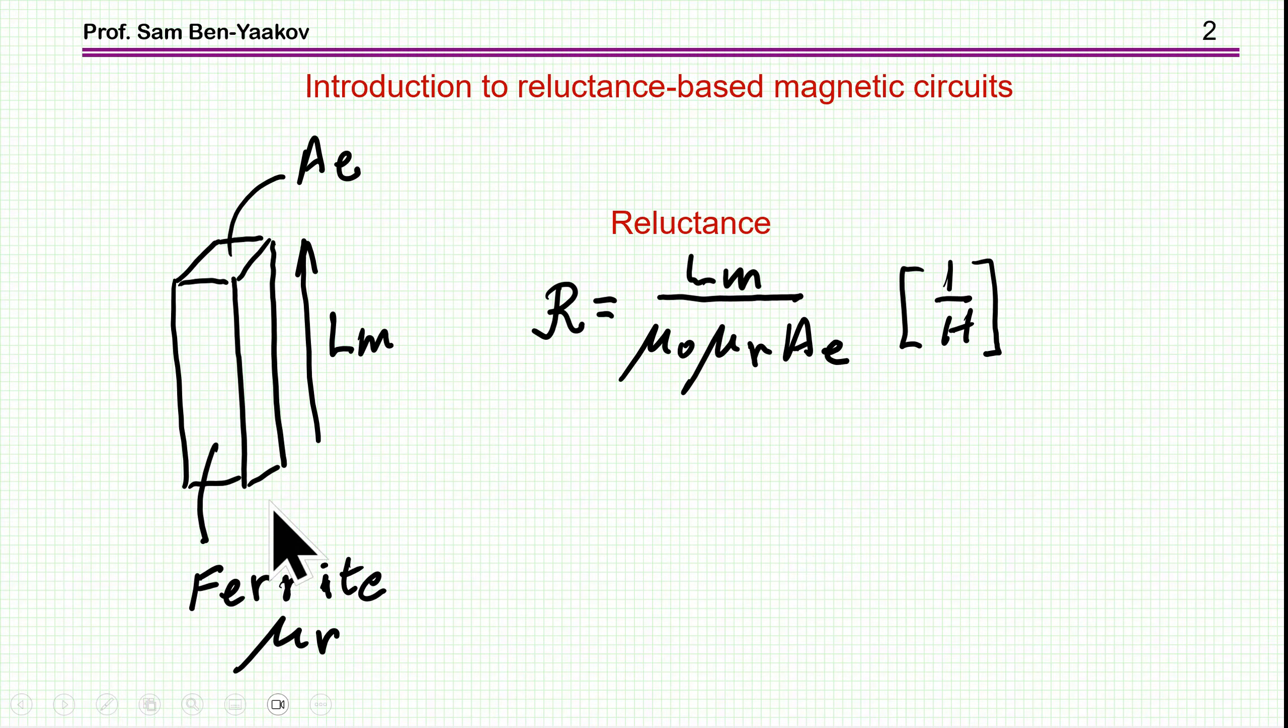So I'm starting here with a slab of a ferrite or ferromagnetic material, say a ferrite, with a relative permeability of mu sub r, length of L sub m, and cross-section area of A sub e. Now the reluctance is defined as L sub m, this is the length, over mu sub zero, which is the vacuum permeability of air, and then the relative permeability and cross-section.